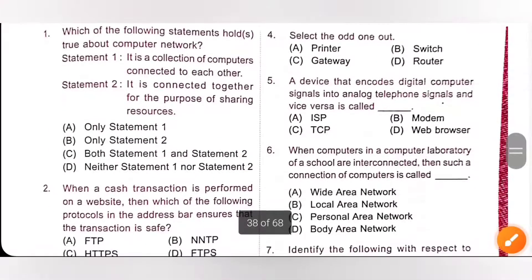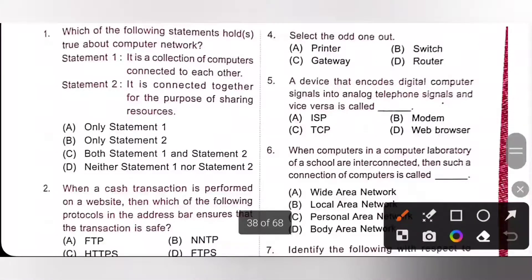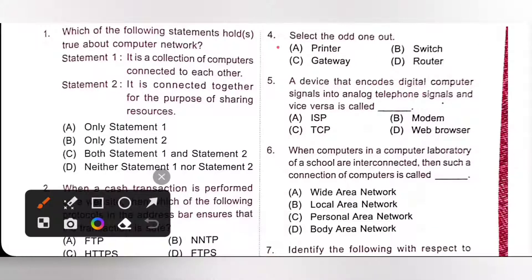Fourth one: select the odd one out. A printer is an output device, while switch, gateway, and router are networking devices. So, the odd one out is printer, and option A is the correct answer.